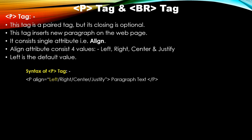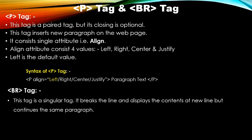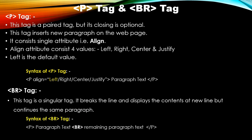The p tag's align attribute accepts values: left, right, center, or justify. The br tag is a singular tag — it breaks the line and displays the content on a new line, but continues the same paragraph. The difference between p tag and br tag will be visible practically in the form of line spacing.